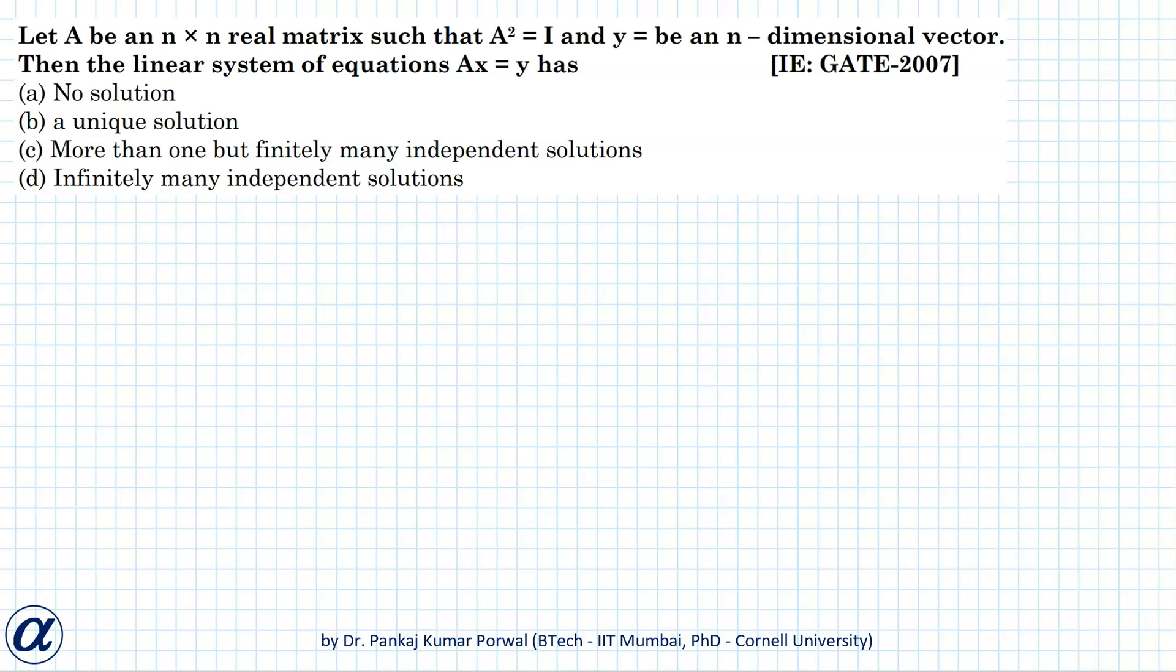In this question, we are given that A is an n by n real matrix such that A squared equals I, and Y is an n-dimensional vector. Then the linear system of equations AX equals Y has what type of solutions?